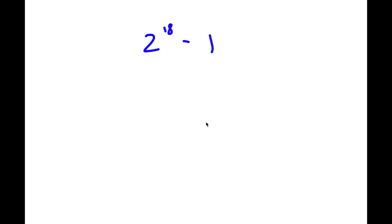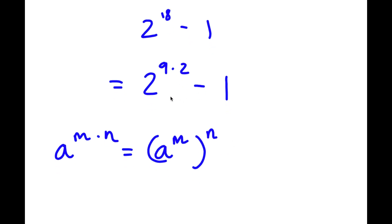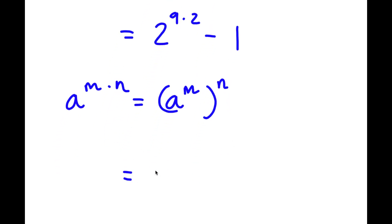In this problem, I have 2 to the power of 18 minus 1. To start, 18 is the same thing as 9 times 2. So I have 2 to the power of 9 times 2 minus 1. If I have something in the form a to the power of m times n, this is the same thing as a to the power of m to the power of n. So 2 to the power of 9 times 2 equals 2 to the power of 9 to the power of 2. Now I have that minus 1.